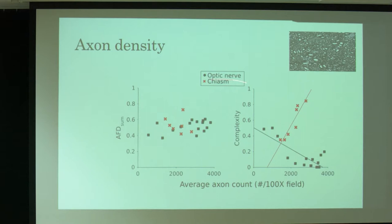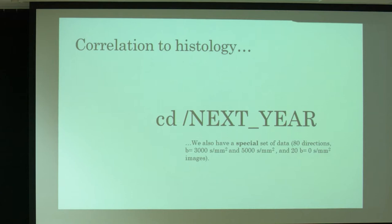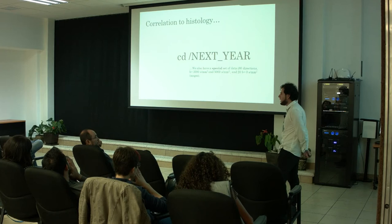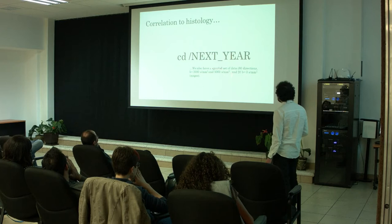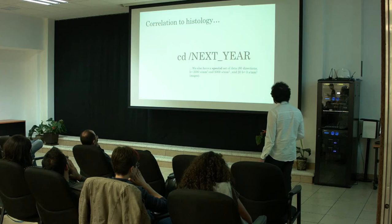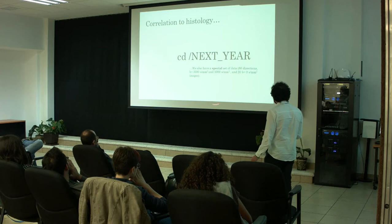We need to make complete correlations to histology. We are using AxonSeg, a software that can make axon segmentation. The MRI acquisition is ready and also the analysis with CSD. We also have a special set of data with two shells of 80 directions — one B-value of 3,000 and the other of 5,000.